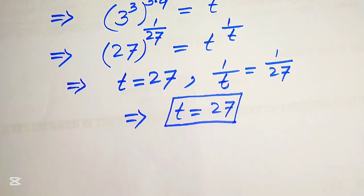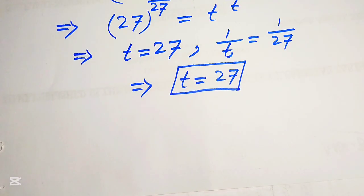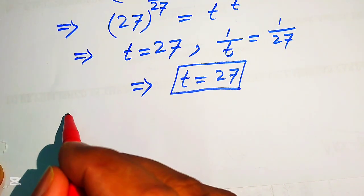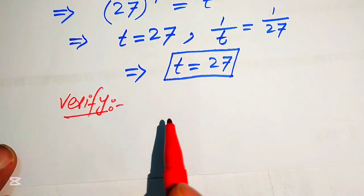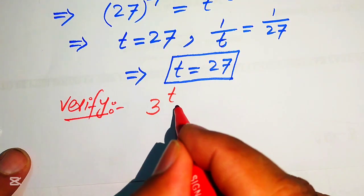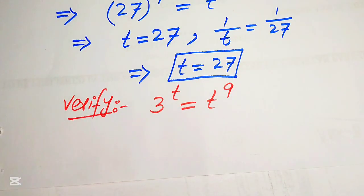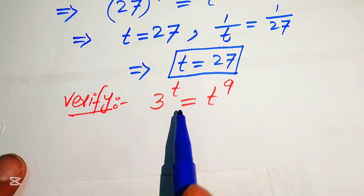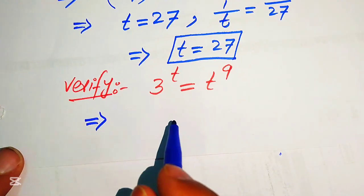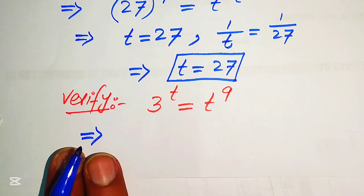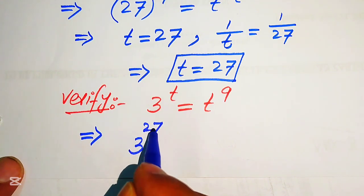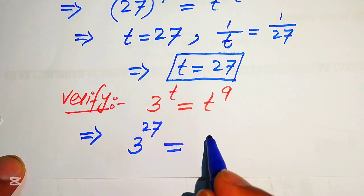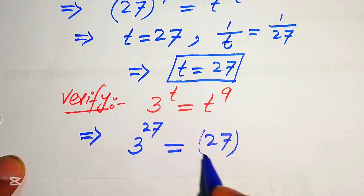This is our final answer. Now we need to verify this value of t. We copy down the given equation: 3^t = t^9. Substituting t = 27 on both sides: the left side becomes 3^27, and the right side becomes 27^9.